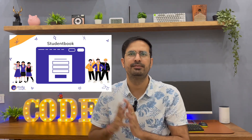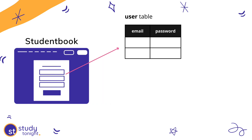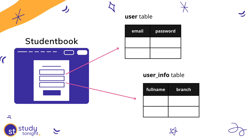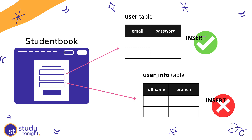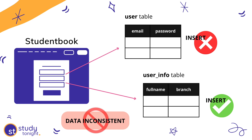Let's take another example. Imagine you have a simple application, a student book. For a student to register for this application, he or she has to fill a form. When a user registers, the login information — like the email and the password — are saved in a user table, whereas the other information is saved in a different user info table. In this flow, if the data is inserted in the user table but for some reason the user info table insert query fails, then our data would be inconsistent. Similarly, if the first insert in the user table fails and the second insert is done, then also data will be incorrect in the database.